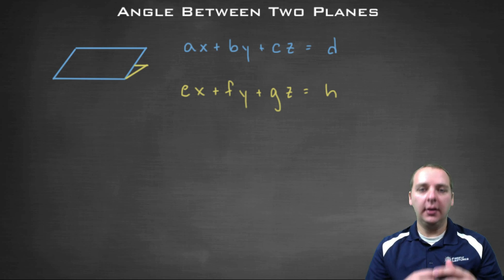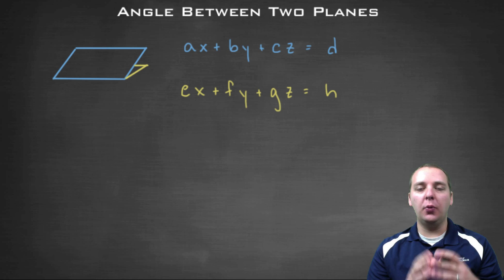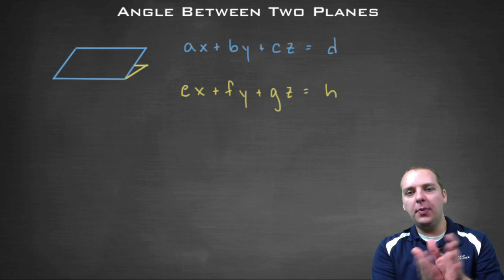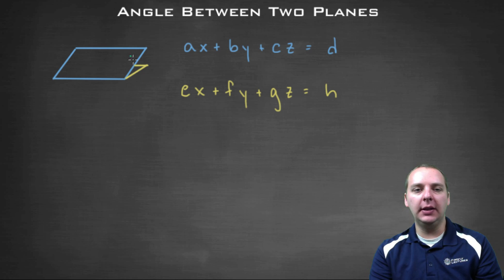A common exercise dealing with the equations of planes in space is one where we're given the equation of two different planes, and then we're asked, what's the angle measure between these two planes here?